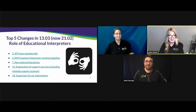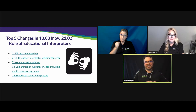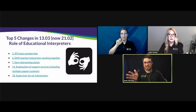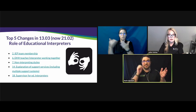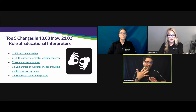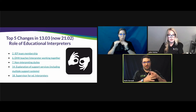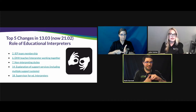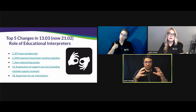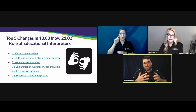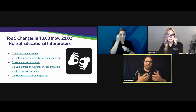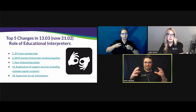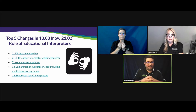There are quite a few changes to the role of the educational interpreter document — now bulletin 21.02, previously 13.03. We're going to elaborate on five of them. The first is IEP team membership. It's so important that interpreters are included in the goals of a student and able to be involved so they can better provide the services asked of them from the IEP itself.